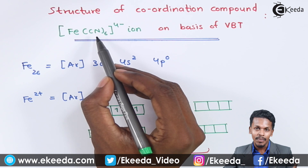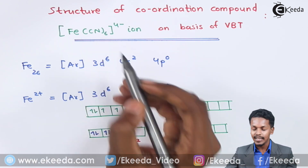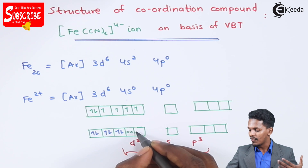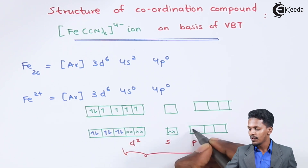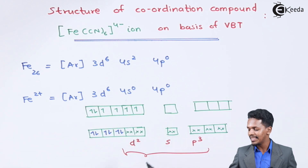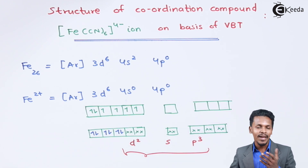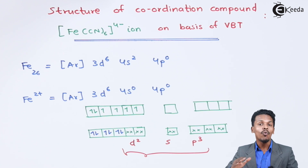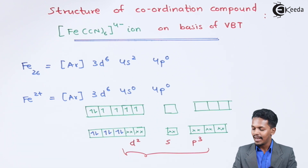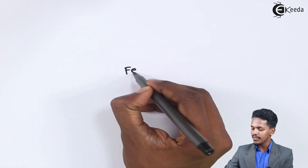The empty orbitals are fulfilled with electrons donated by the cyanide ligands. One lone pair of electrons from each of the six cyanide ligands — first, second, third, fourth, fifth, and sixth — are donated. This overlapping is very strong and the bond is known as a coordinate covalent bond.